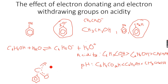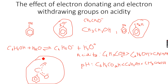The benzoate ion — this entire ion — is least likely to bond with an H+ ion. As it is least likely to bond with an H+ ion and is more stable, it will be the most acidic and will have the lowest pH. As you can see, benzoic acid is the most acidic.